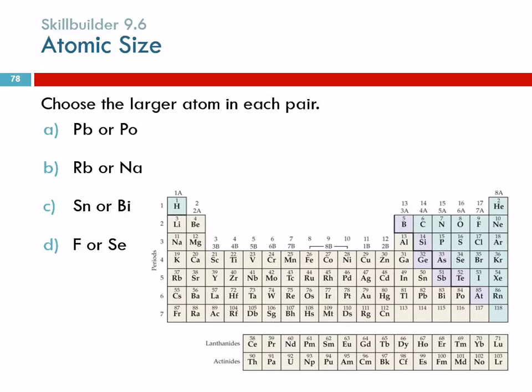So we should be able to apply this. Take lead versus polonium — which is bigger? Lead is bigger, because as we go across a period, atoms get smaller, and polonium is further to the right than lead.